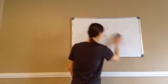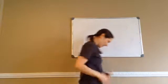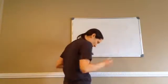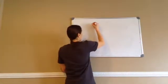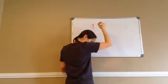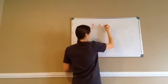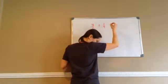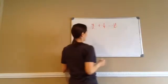Algebra 1, Lesson 78. This lesson is on rational equations. For example, here's 78.1: y over 2 plus 1/4 equals y over 6.